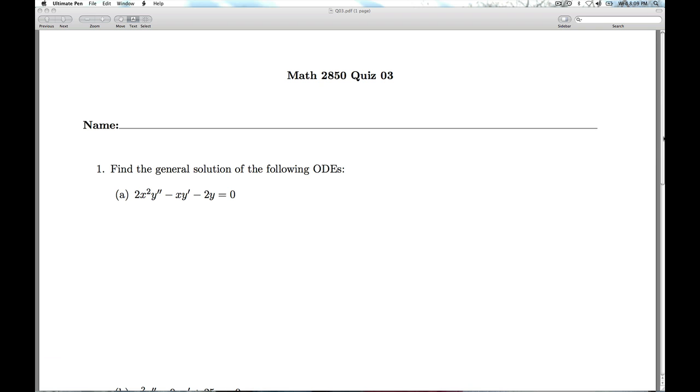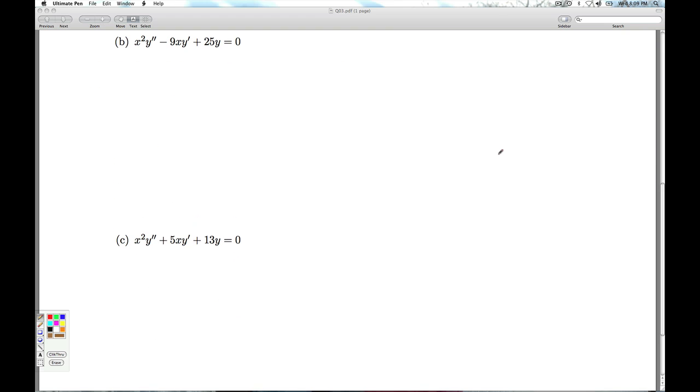Part B, another Cauchy-Euler for us. The auxiliary equation is going to be m times m minus one minus 9m plus 25 is zero, which gives us m squared minus 10m plus 25 is zero. Once again, that factors nicely for us. And we get a double root.